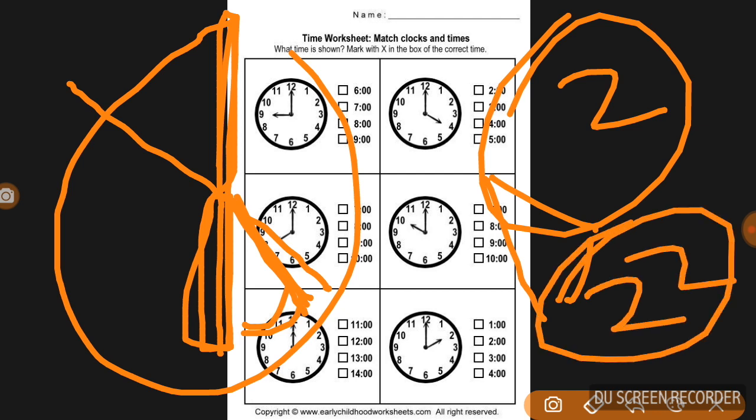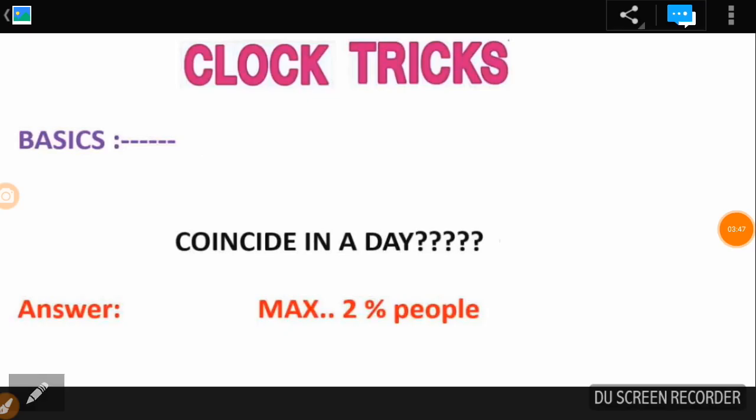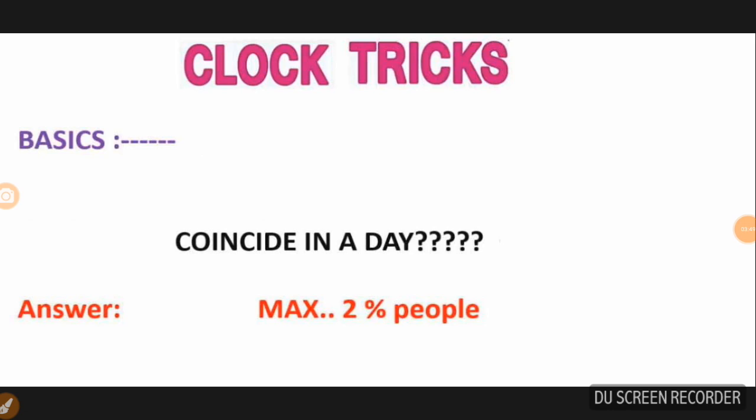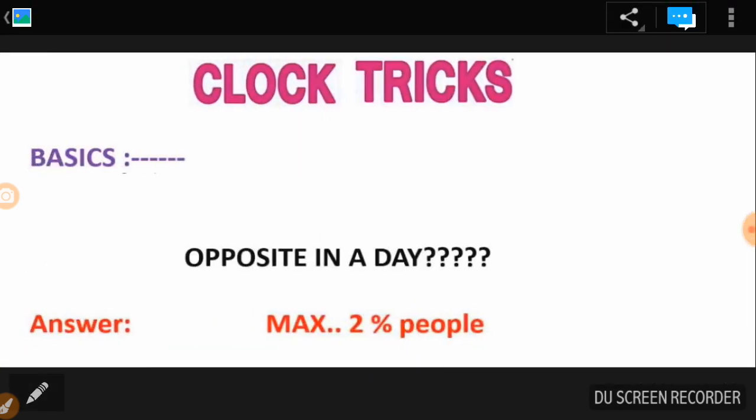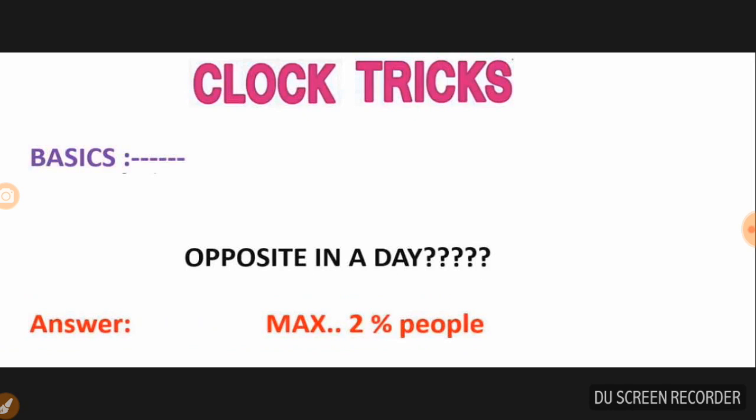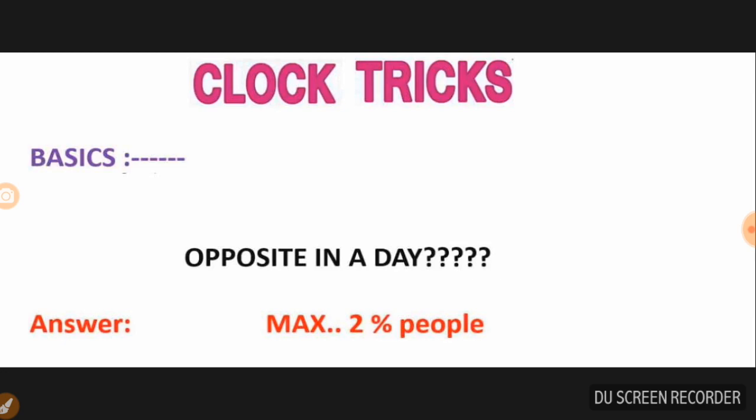By understanding coincide and opposition, you can solve these problems. Maximum two percent of people get these wrong out of a hundred, so if you learn these tricks properly, you'll be successful.